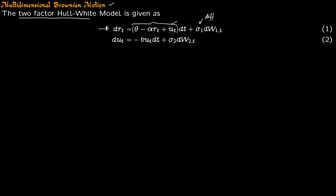But here this factor u_t is stochastic. So this evolves according to a stochastic differential equation. du_t equals minus b*u_t*dt plus sigma_2*dW_{2,t}. So you have a Brownian motion here, a Brownian motion here. This is the diffusion of this equation and minus b*u_t is the drift here.